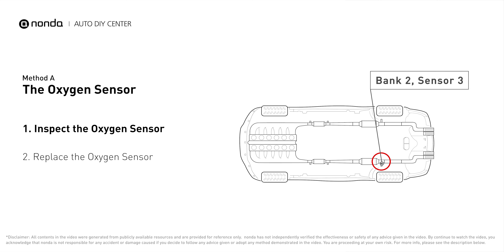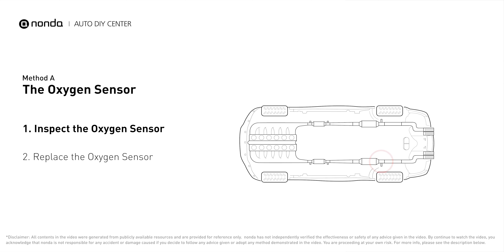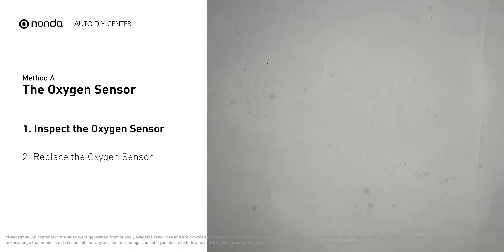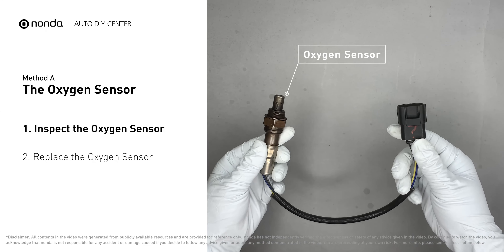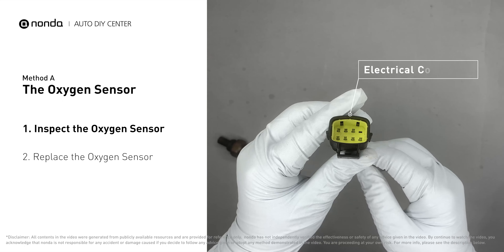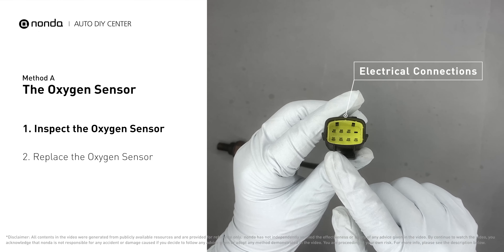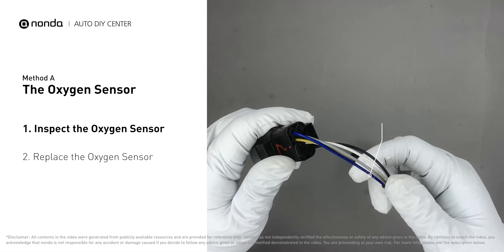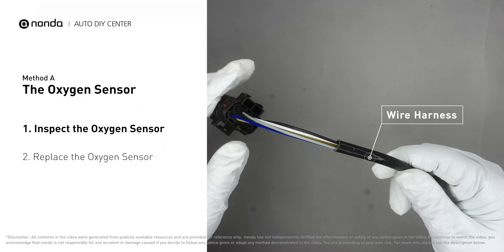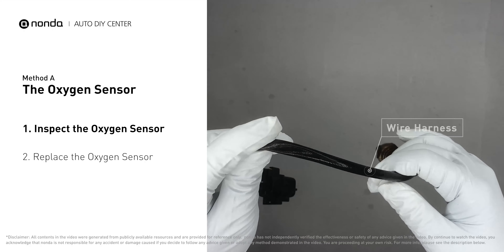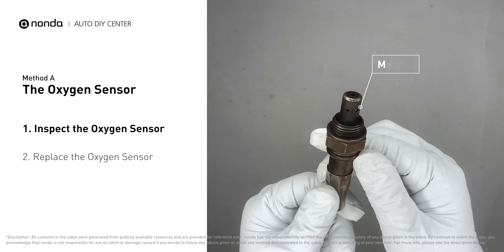This oxygen sensor is located right after the catalytic converter. Bank two is on the side with cylinder number two. Sensor number three is downstream of the last catalyst in the exhaust system.